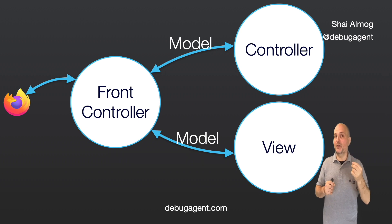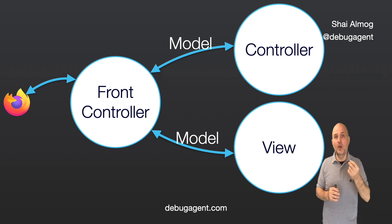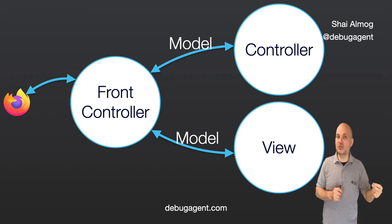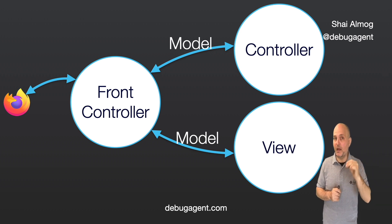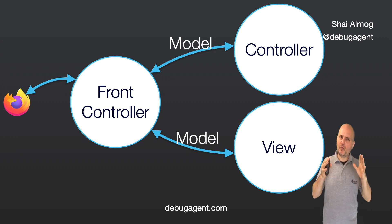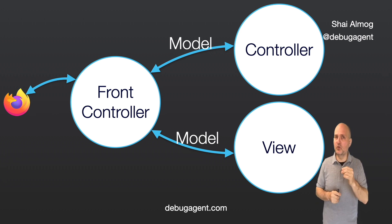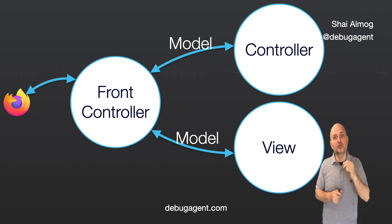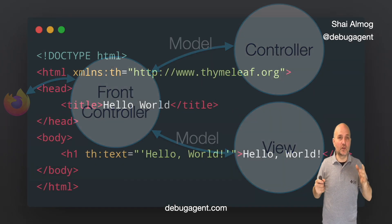The view portion of Spring MVC is pluggable and can be implemented with any common templating engine. One of the popular choices is Thymeleaf. Thymeleaf is a Java-based template engine used to process and render HTML, XML, JavaScript, and other markup languages. It is designed to work seamlessly with the Spring framework, but can also be used in standalone applications. Thymeleaf's templates are written in standard HTML and use special attributes and tags to bind data to the template. This is all very abstract, so let's explain it with some code.